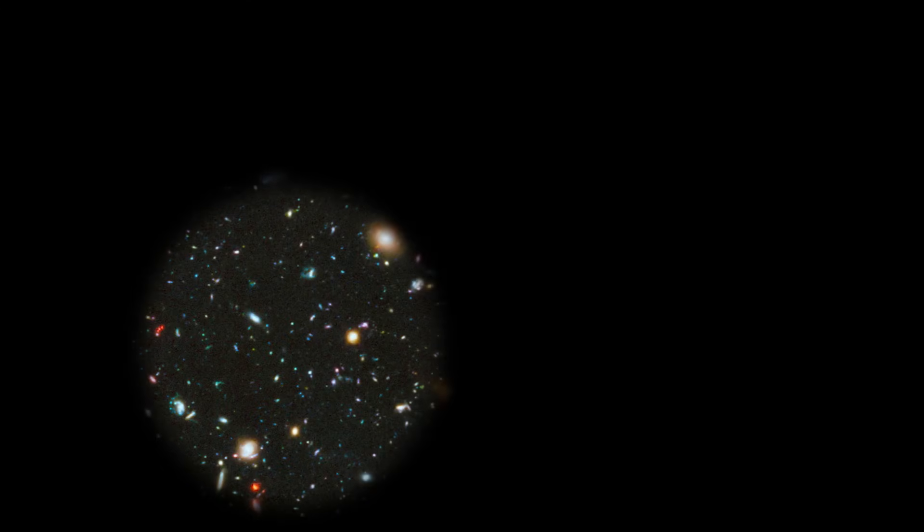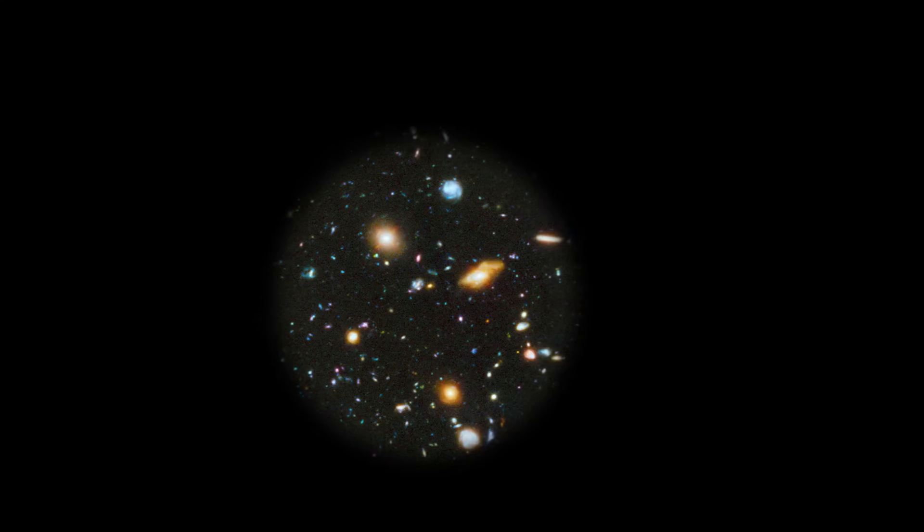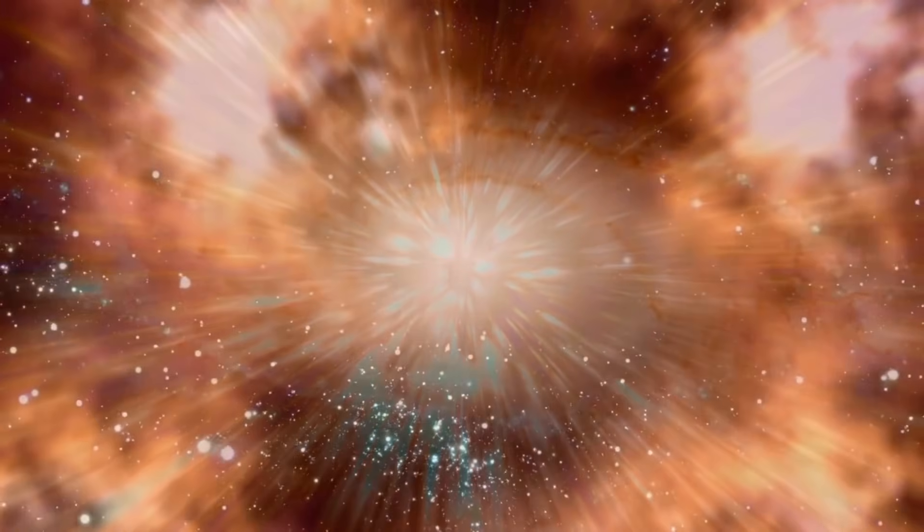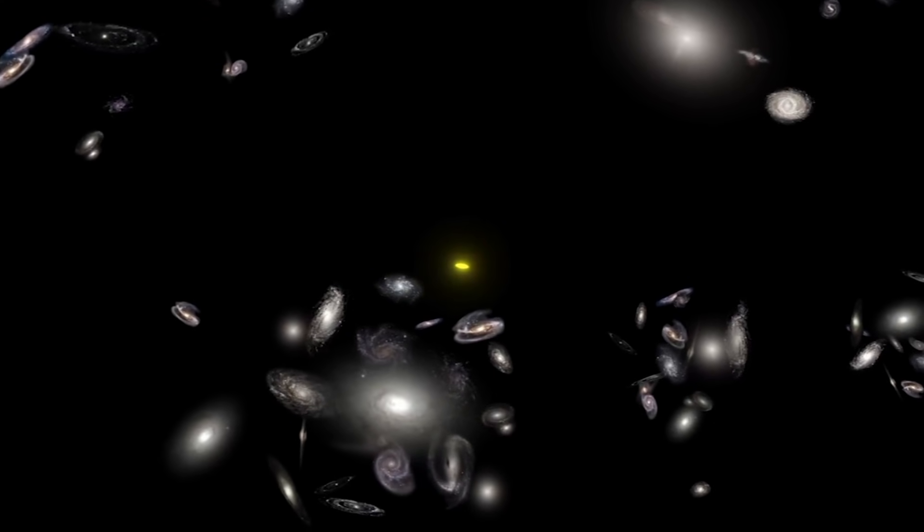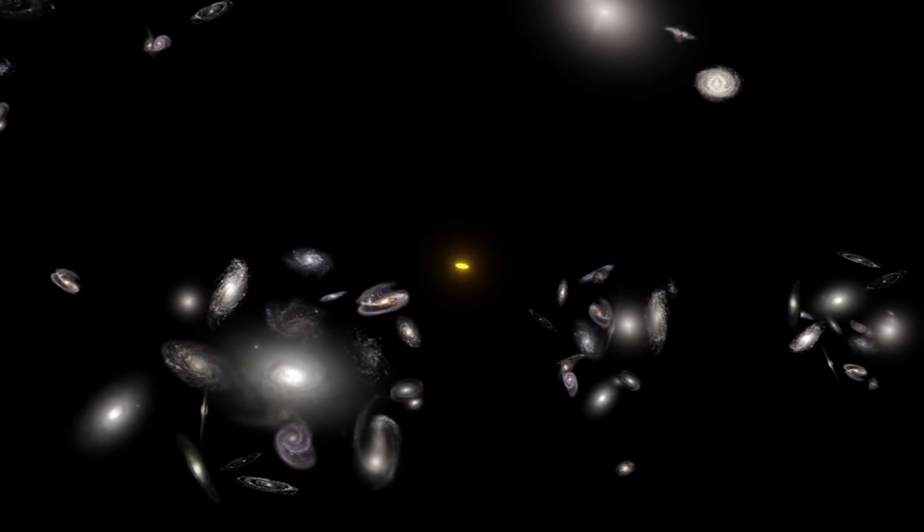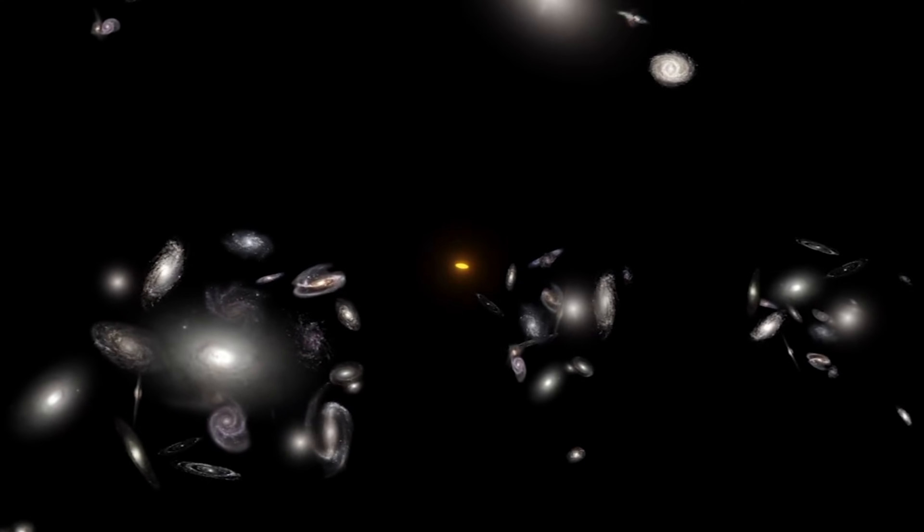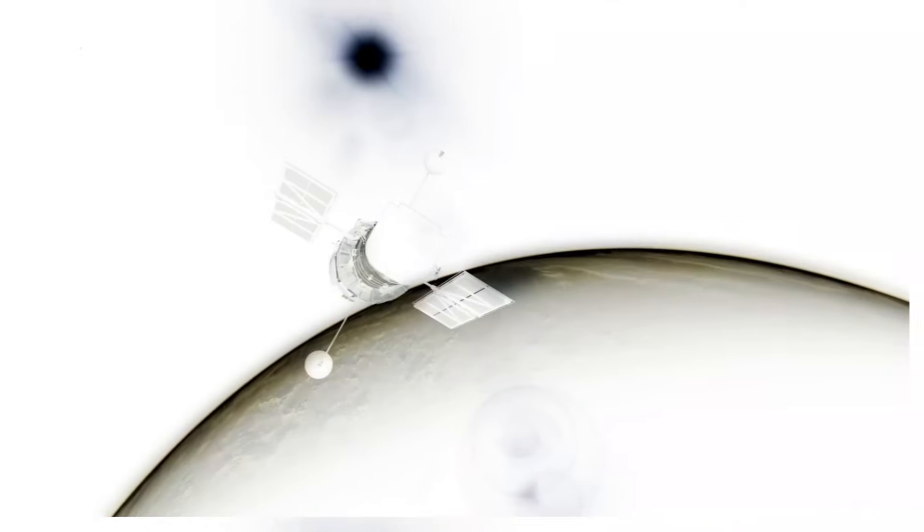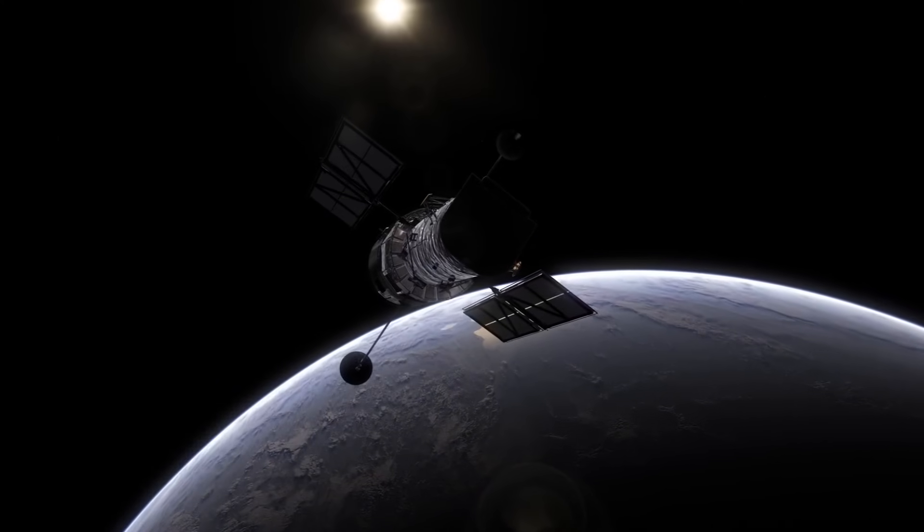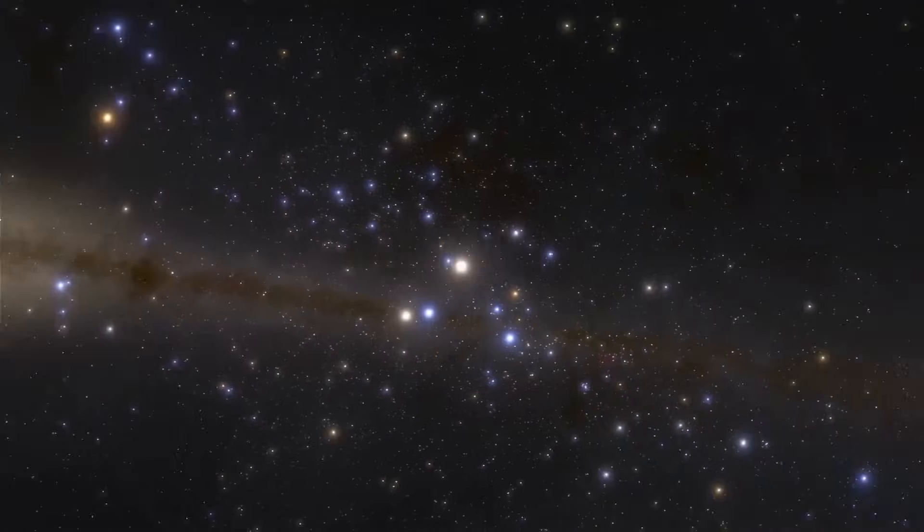The striking images captured by the James Webb Telescope have challenged our understanding of the origins of the universe. Specifically, these images directly contradict the Big Bang Hypothesis, which has long been considered an unquestioned truth by most cosmology theorists. The galaxies captured in these images appear to be too small, smooth, old, and numerous compared to the predictions of the Big Bang Hypothesis. The fact that the observed galaxies are two to three times smaller than similar galaxies imaged by the Hubble Space Telescope completely defies the expected behavior in an expanding universe.